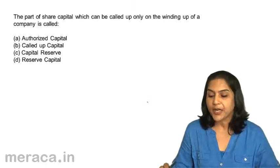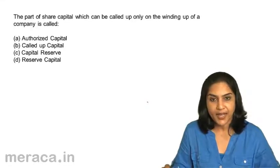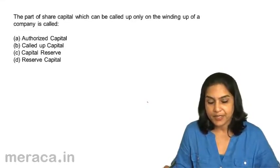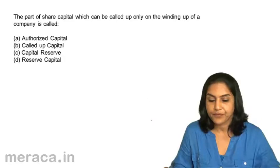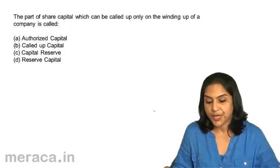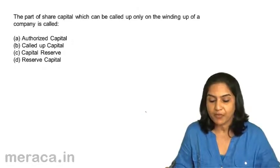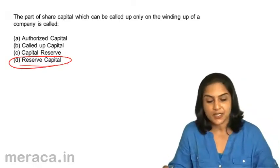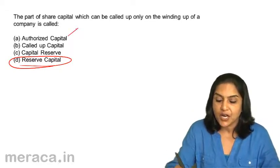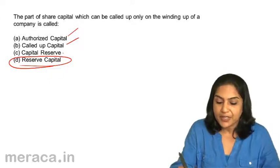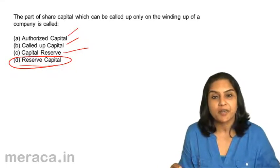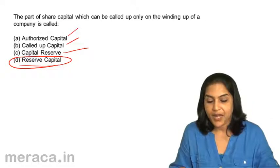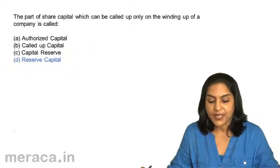The part of share capital which can be called up only on the winding up of a company is called: A. Authorized Capital. B. Called Up Capital. C. Capital Reserve. D. Reserve Capital. The answer is Reserve Capital. Authorized capital is the capital with which it is registered. Called up is what has already been called up. Capital Reserve is not capital — it is a capital profit, earned not by ordinary business activities. Reserve capital is that part of capital which can be called up only on winding up. Correct answer is D.